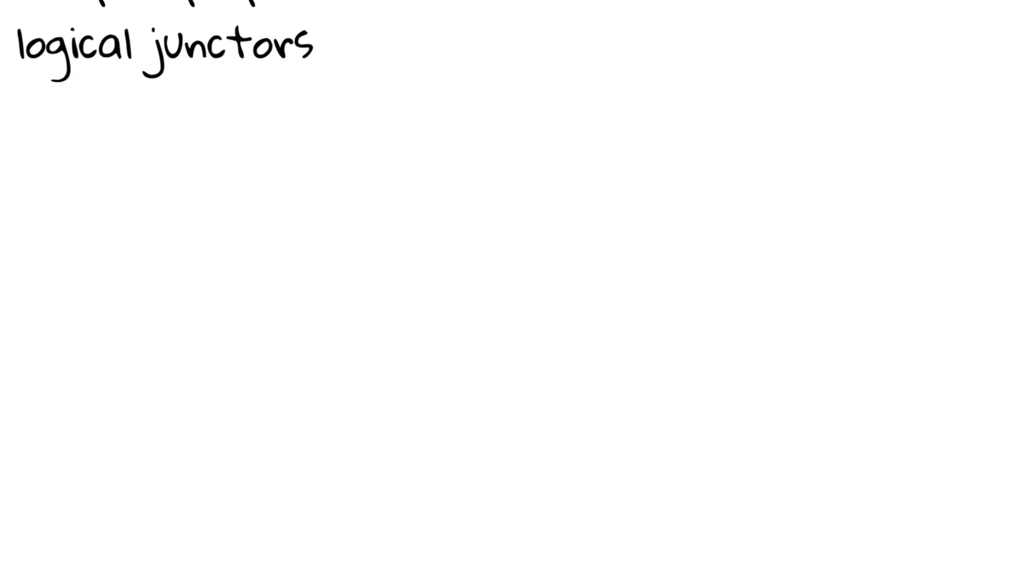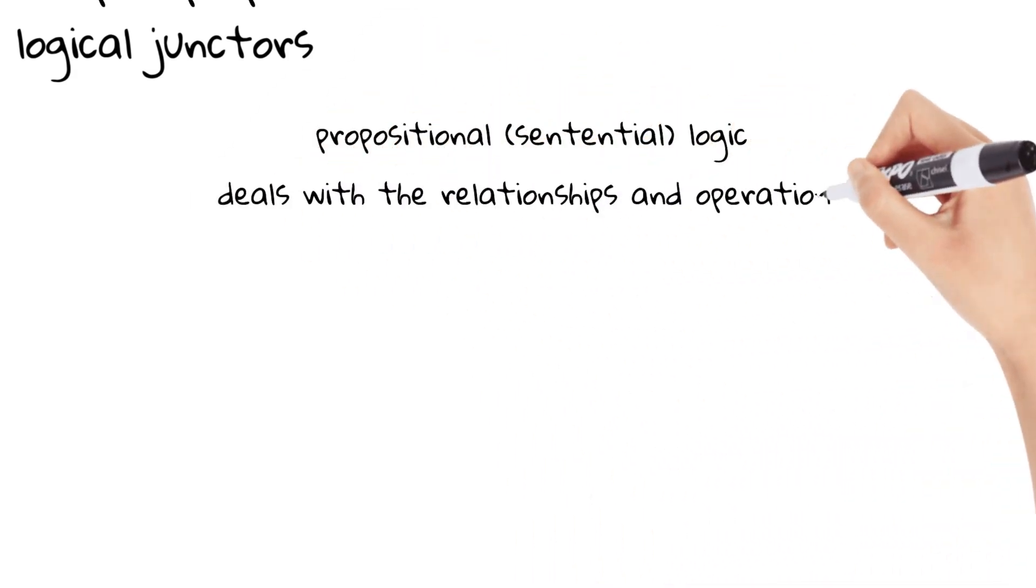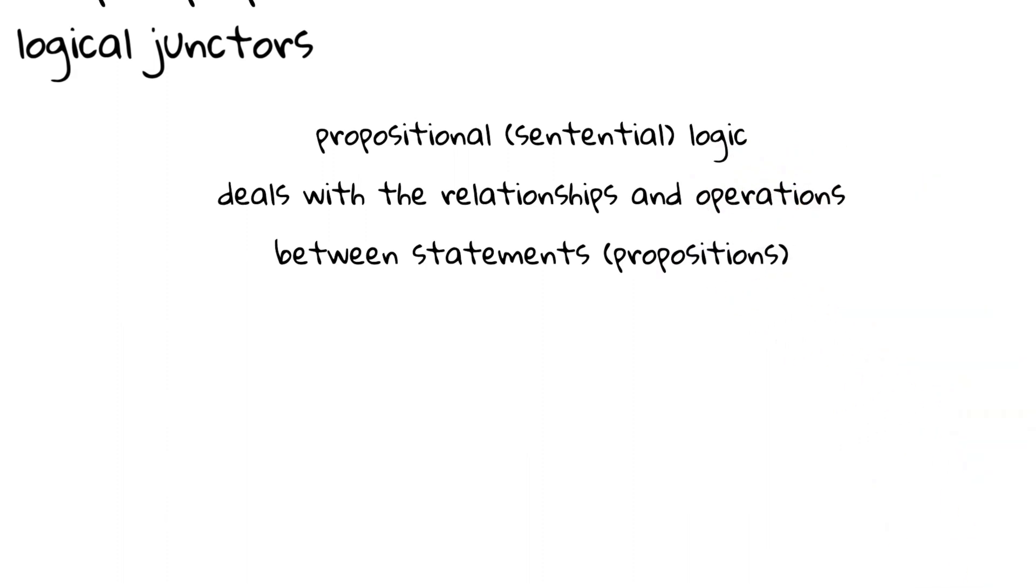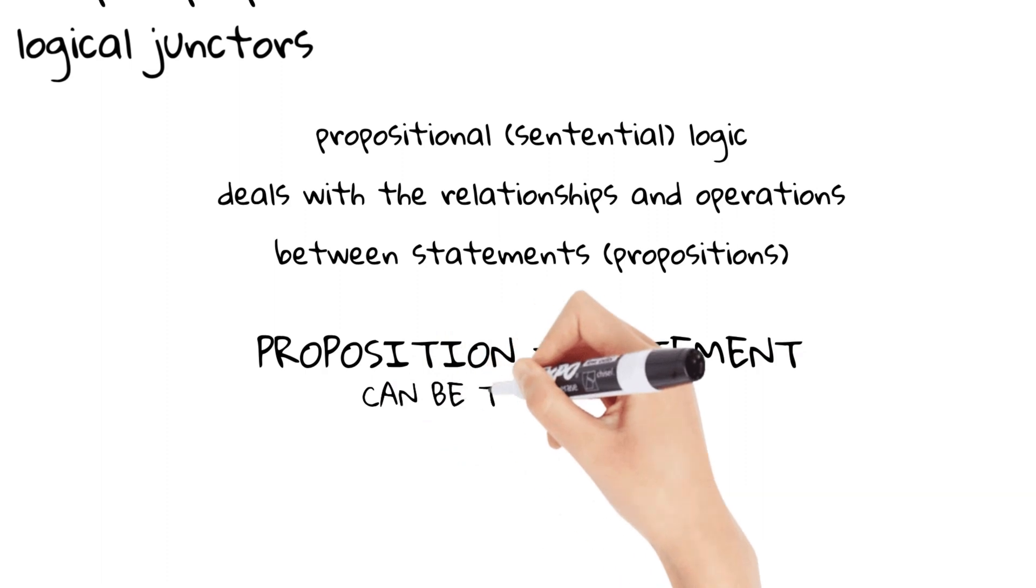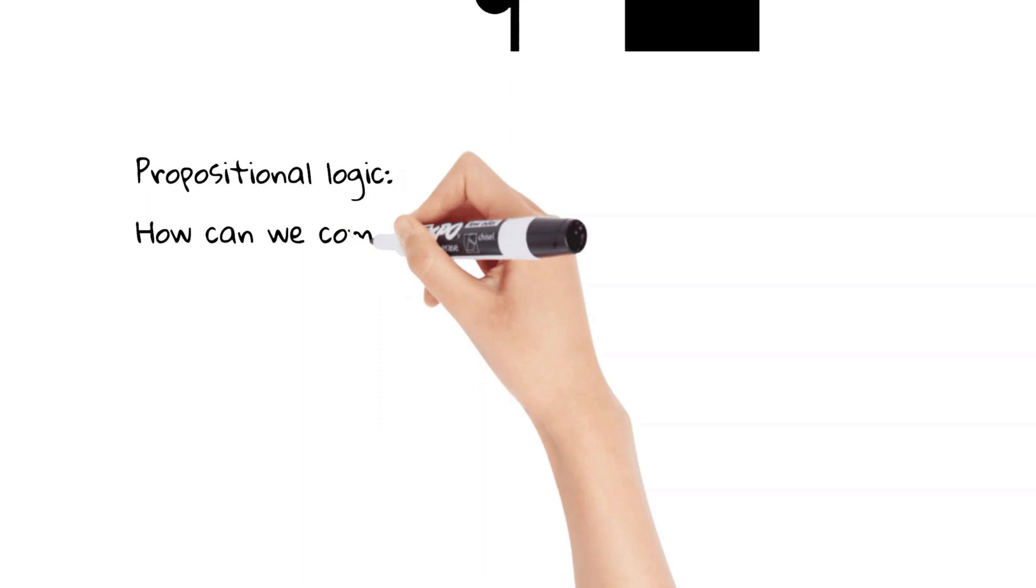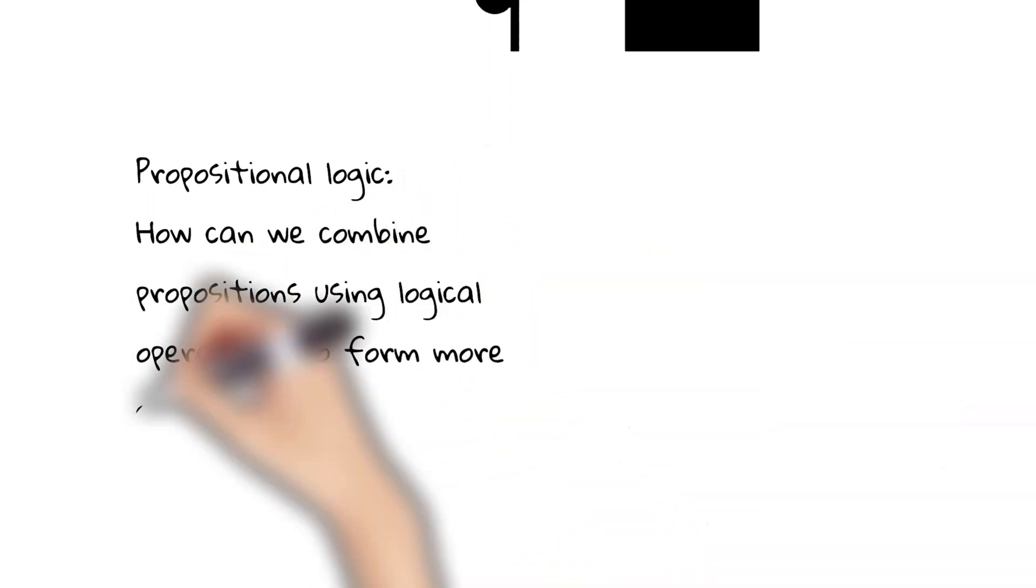Propositional logic. Propositional logic, also known as sentential logic, is a branch of formal logic that deals with the relationships and operations between statements, which are called propositions. A proposition is simply a statement, or a claim, that can be either true or false. Propositional logic focuses on studying the ways in which these propositions can be combined and manipulated using logical operators, such as and, or, and not.